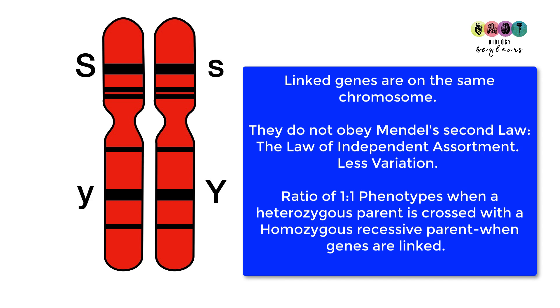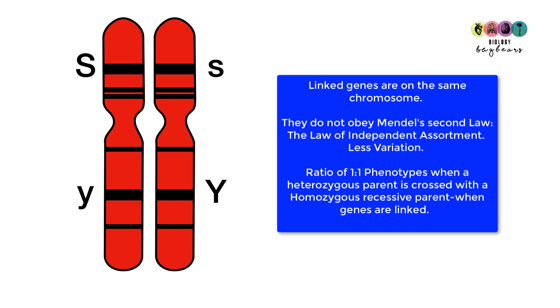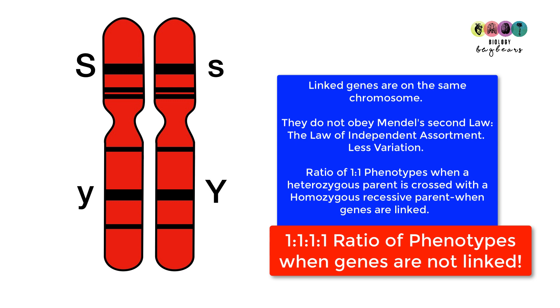Linked genes are on the same chromosome. So basically, Mendel's second law, the law of independent assortment, does not apply. This results in ultimately less variation in the phenotypes, because you're going to get a ratio of one is to one phenotypes if a heterozygous parent is crossed with a recessive parent that's homozygous, and the genes are linked. Whereas if they're not linked, the same cross would produce a phenotype ratio of one is to one is to one is to one.